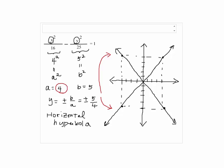So our a is 4, so we go to the left by 4 and to the right by 4, this will give us the x-intercepts, so our graph should look like this.